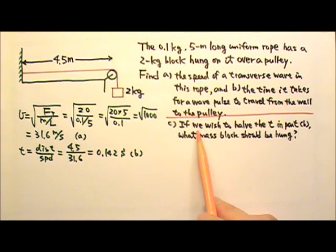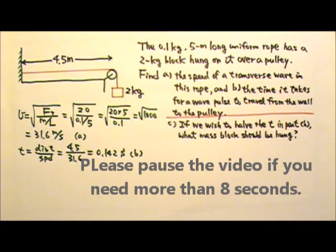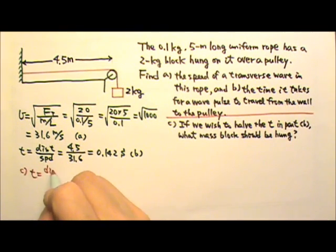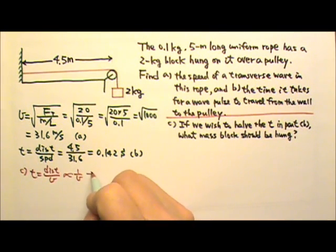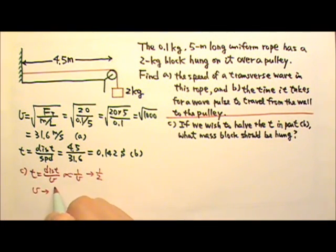Part C: if we wish to halve the time in part B, what mass block should be hung at the end of the rope? Time is the distance traveled divided by the speed, and the distance traveled is still the same. So time is proportional to 1 over speed. We want the time to be halved, which means 1 over v must be halved, so v should be doubled.